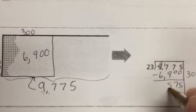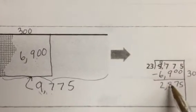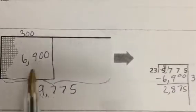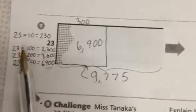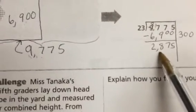17 minus 9 is 8, 8 minus 6 is 2. I still have 2,875 squares left to put in on my model. I'm going to look back at the numbers that I know and try to find a number that's going to get me close to 2,875.